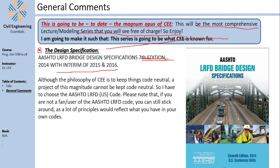I know the CEE channel tries to keep things code-neutral, however highway bridge design is nothing like code-neutral — it is code-intensive, so I have to choose a code. I have extensive knowledge with the AASHTO LRFD code and not much with the Eurocode for bridges. Even if you're not a fan of AASHTO LRFD, you can still follow along, because you'll see principles like Strength 1, Strength 2, Serviceability 1, Serviceability 2, and fatigue limit states that have counterparts in the Eurocode.